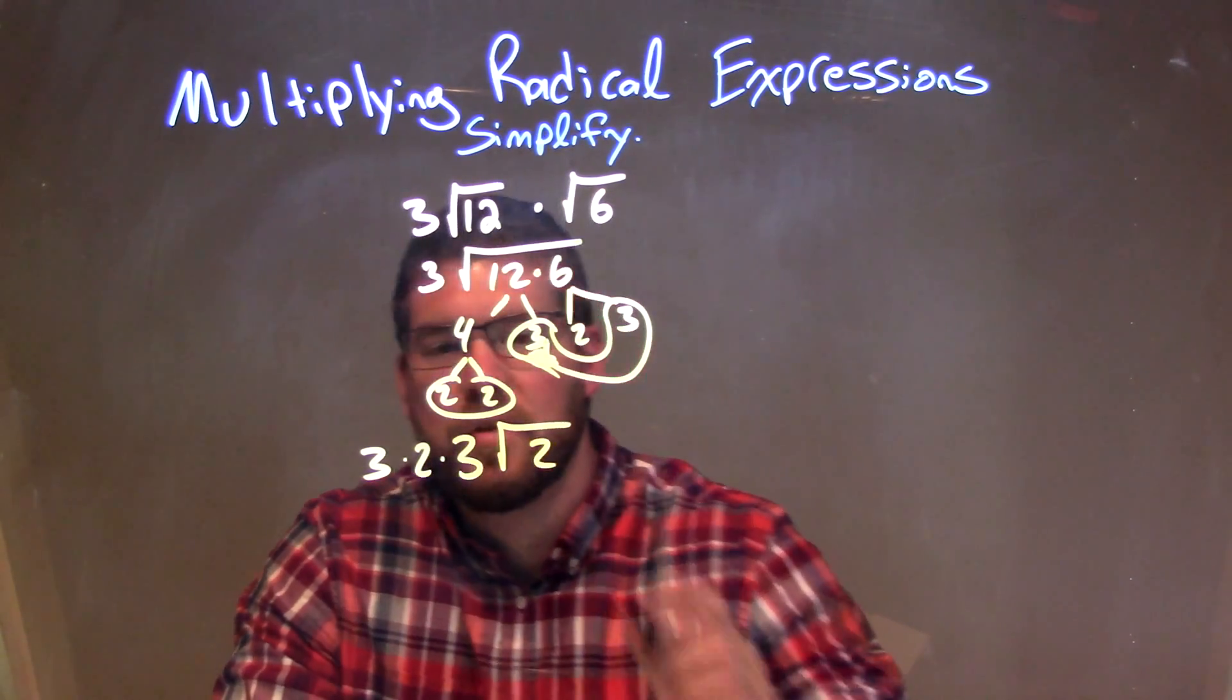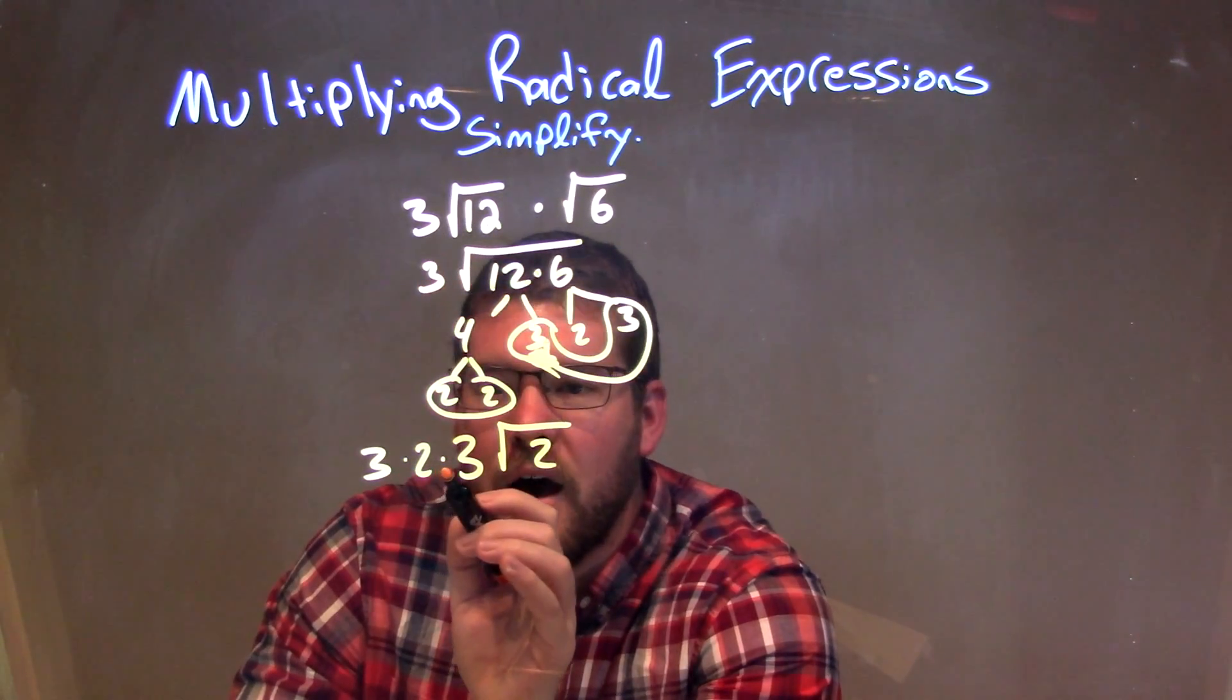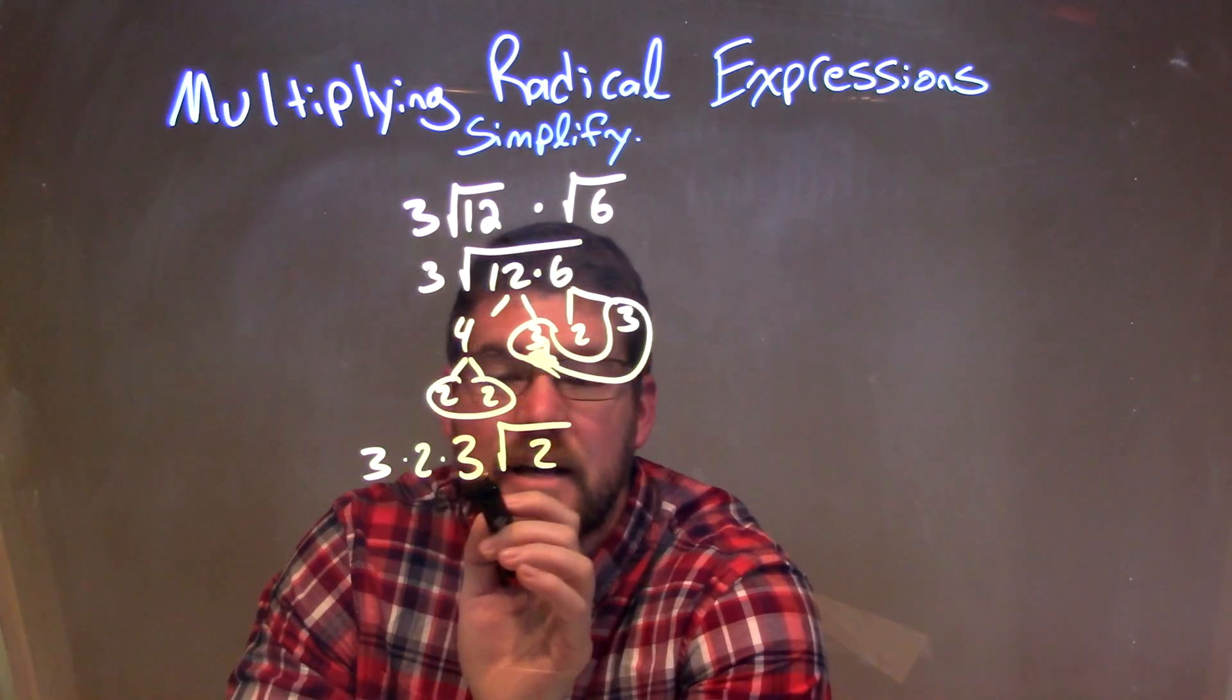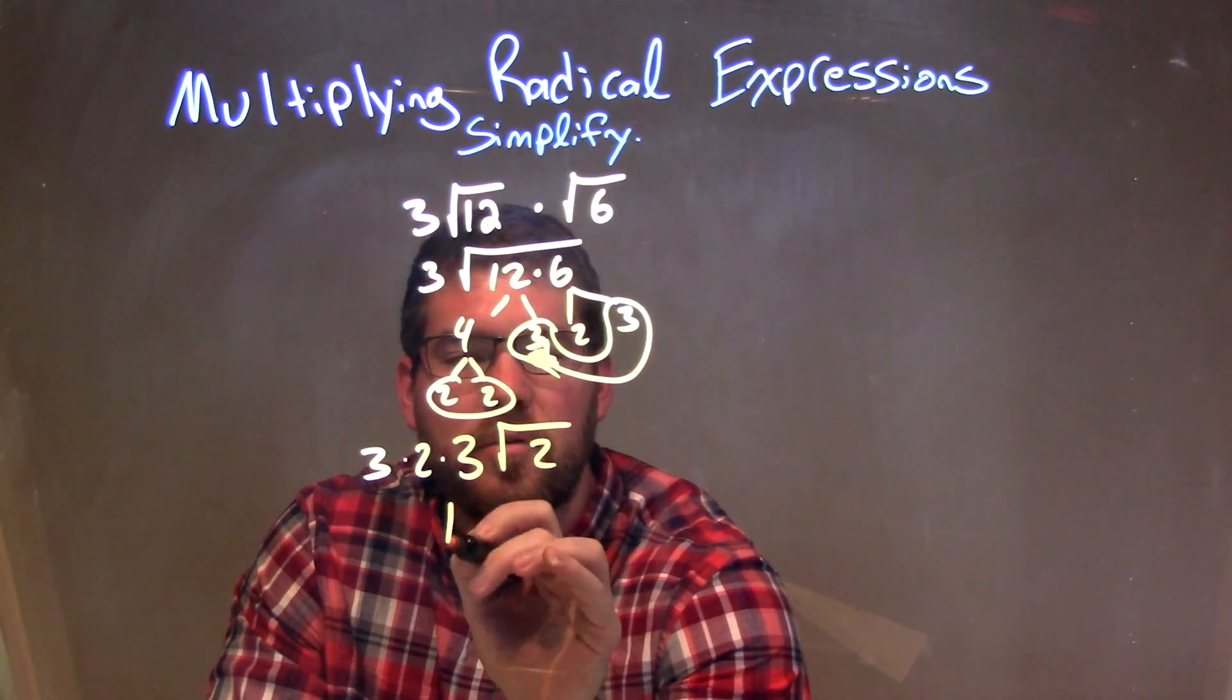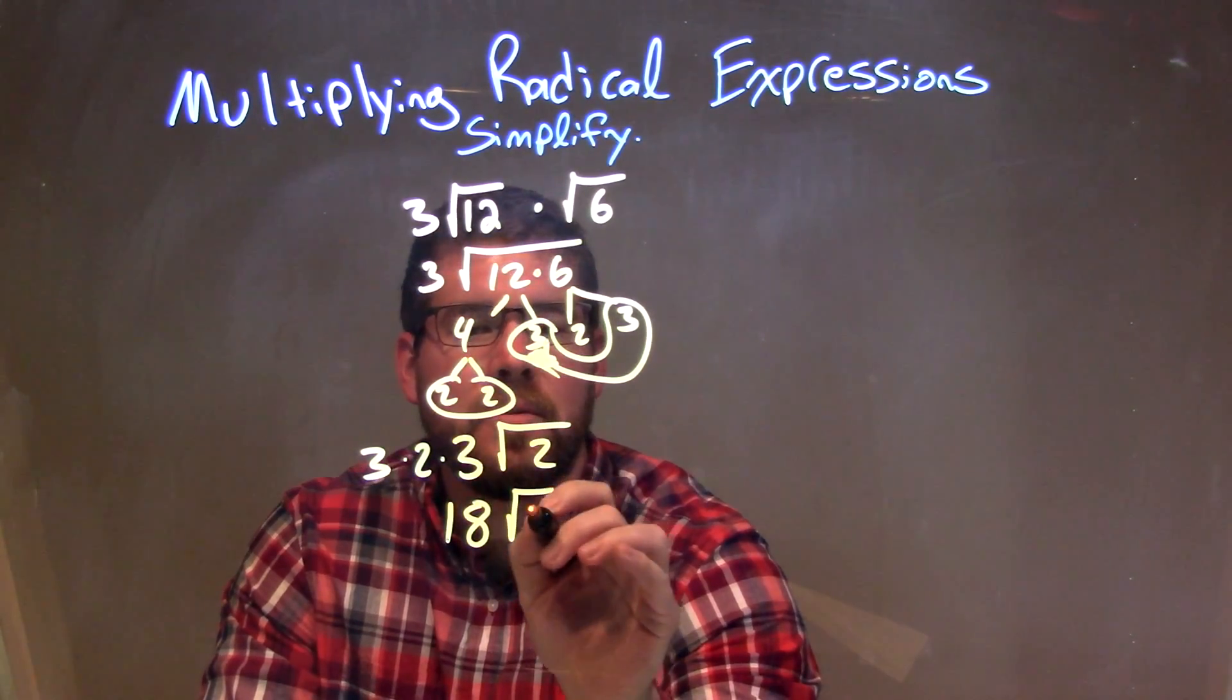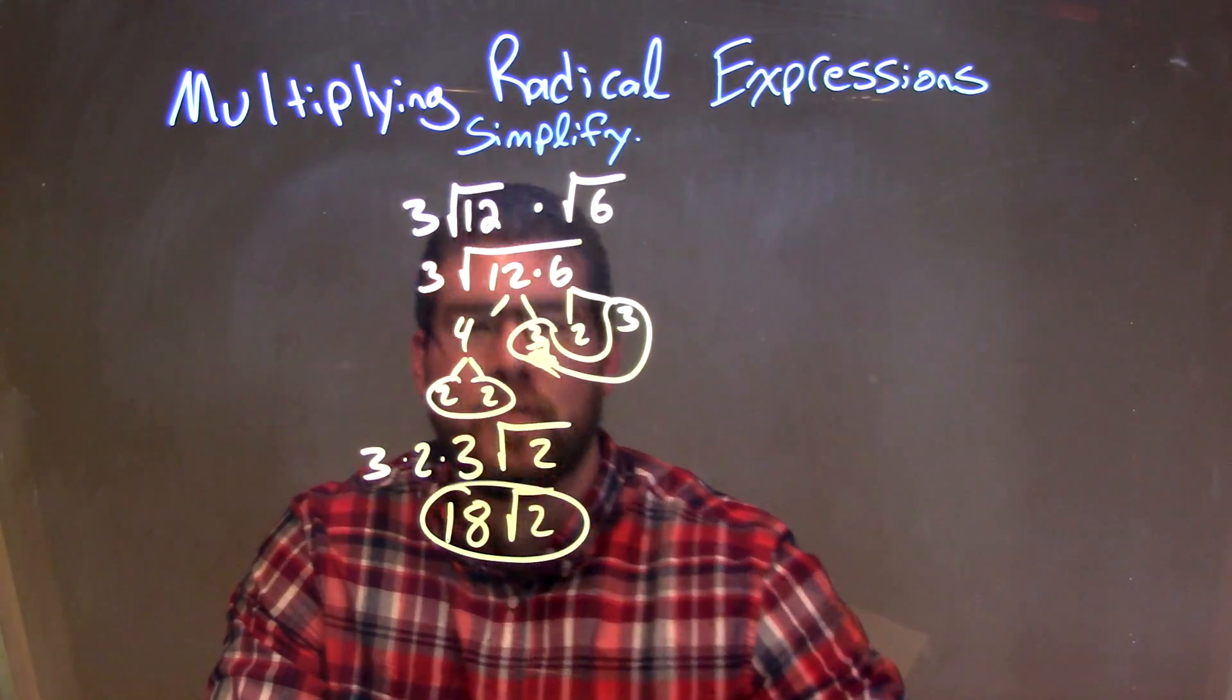So now we can simplify here. 3 times 2 times 3. Well, 3 times 2 is 6 times 3 is 18. So we have 18 times the square root of 2, and that is our final answer.